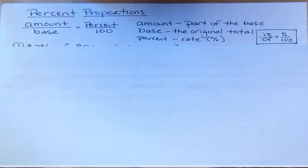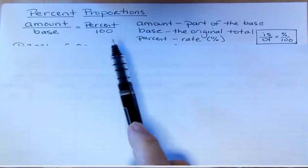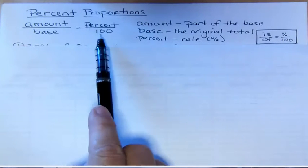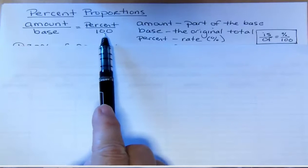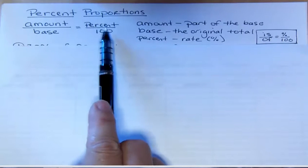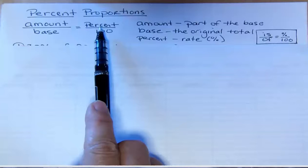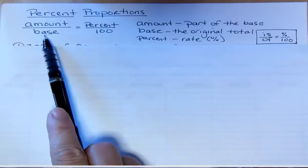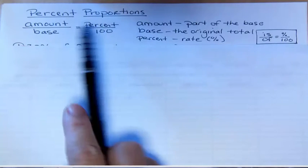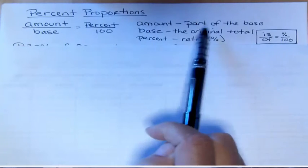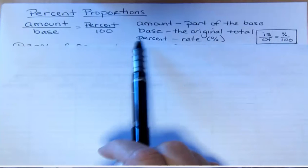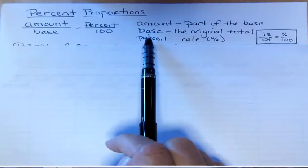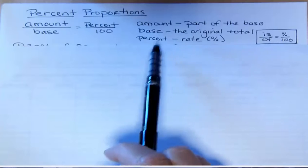The percent proportion has 100 in the bottom right corner because percent is based on 100. That's always going to go there. The percent goes on the top—that's also called the rate sometimes—and then the base and the amount. The amount is some part of the base. The base, when you're talking about a word problem, is the original total, and the percent is the rate.